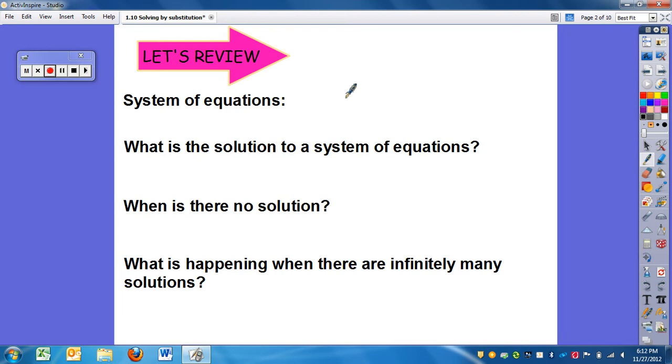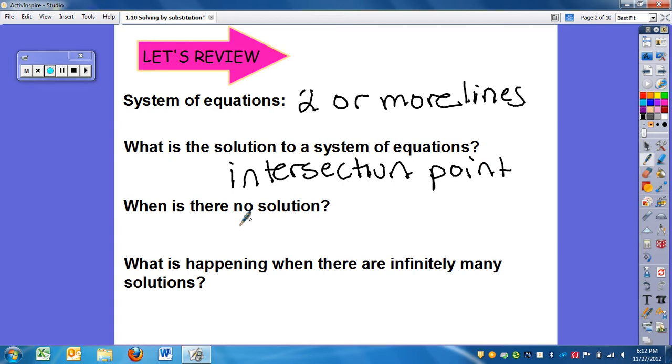So your objective is that you can solve a linear system of equations by using substitution. Let's review. So what is our system of equations? Well remember this is two or more lines. So what are we trying to find when we're solving a system of equations? We're trying to find the intersection point. When is there no solution? The lines are parallel to each other. That means they don't intersect. And what happens when there's infinitely many solutions? Well that means they are the same line.